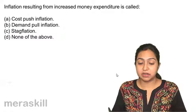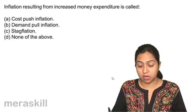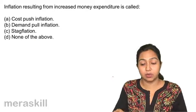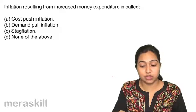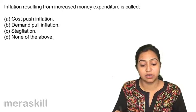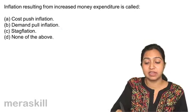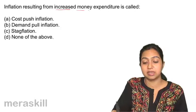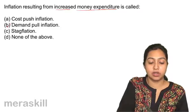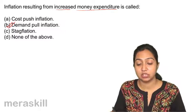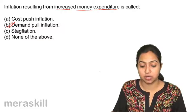Inflation resulting from increased money expenditure is called—we had done this question the other way a few questions back. What is demand-pull inflation? Why is demand-pull inflation caused? Demand-pull inflation occurs when there is an increase in money expenditure. So, increased money expenditure results in demand-pull inflation.